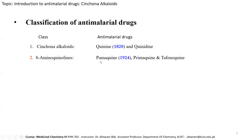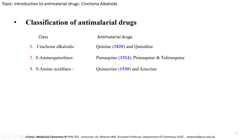The second class is 8-aminoquinoline; an example is primaquine, synthesized in 1924, about a century after quinine's discovery. Other derivatives like pamaquine and tacmokin were also synthesized as 8-aminoquinoline derivatives. The third class is 9-aminoacridine; examples include quinacrine, synthesized in 1930, and azacrine.